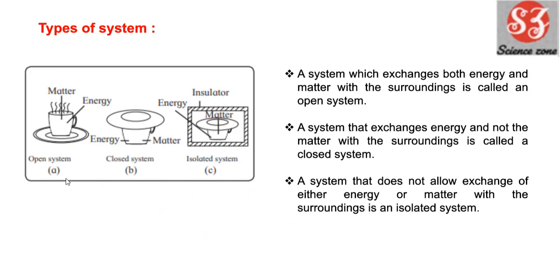Next: types of system। System तीन types के होते हैं: पहला open system, दूसरा close system, तीसरा isolated system। Open system एक ऐसा system है जो दोनों exchange करता है — energy भी और matter भी — with surrounding। जैसे आपका cup of tea, जो heat energy exchange कर रहा है surrounding के साथ क्योंकि आप cup of tea को ज्यादा देर तक रोखोगे तो ठंडा होने लगेगा।